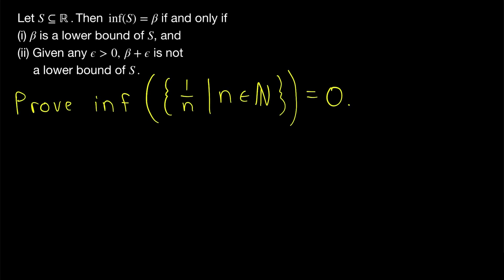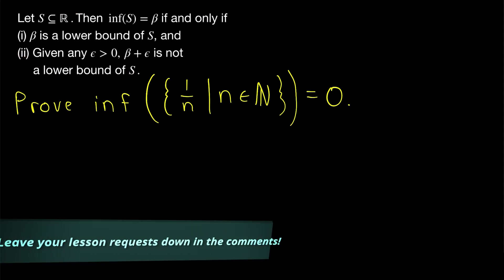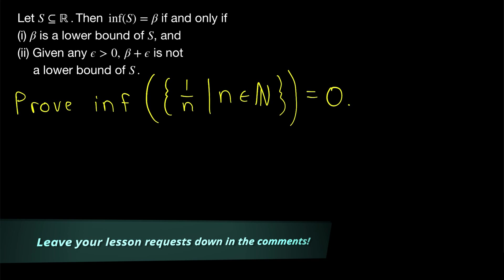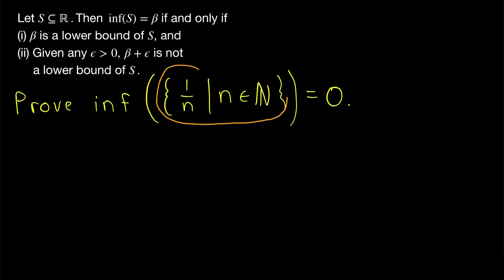In a previous lesson, we introduced the definitions of supremum and infimum of a set. We also proved an equivalent definition for the infimum of a set. And in today's Wrath of Math lesson, we will use it to prove that the infimum of the set of reciprocals of natural numbers is equal to zero.